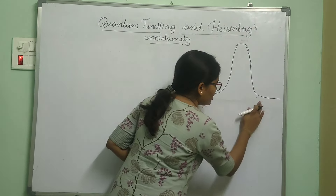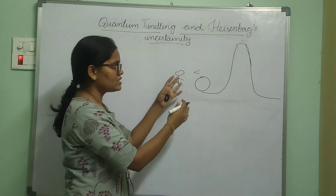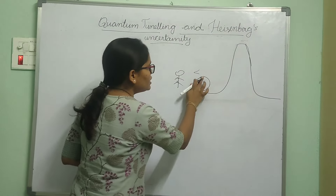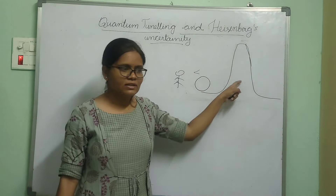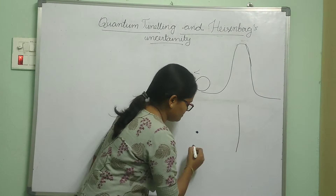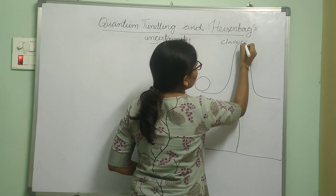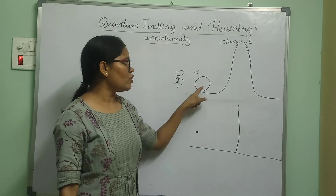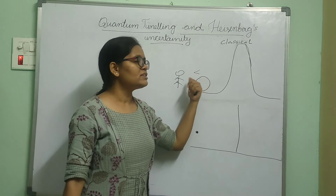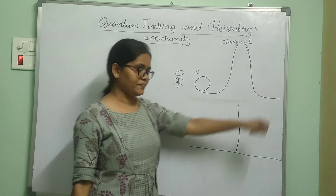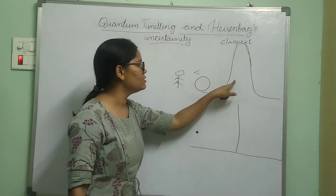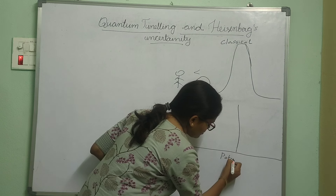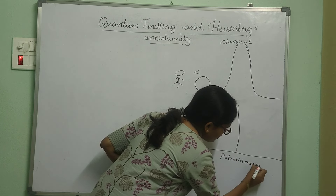Now let us consider the same scenario in the quantum mechanical world. Let me replace this ball with an electron, and let me replace this hill with a potential energy barrier. So in classical physics we saw this ball is not going to appear on the other side until it has sufficient energy to cross the hill. In the quantum world, we are replacing the ball with an electron and the hill with a potential energy barrier.